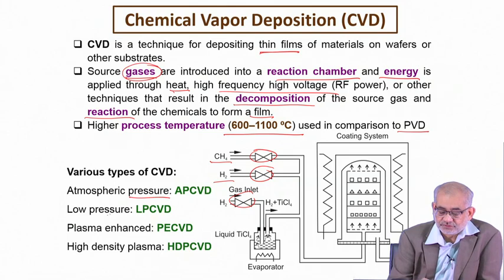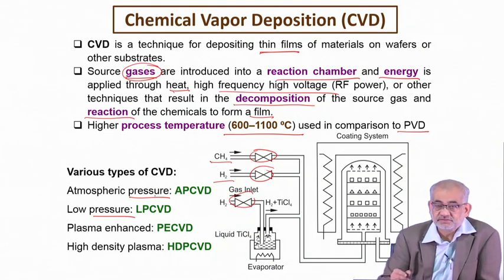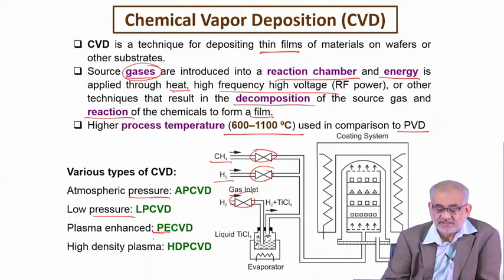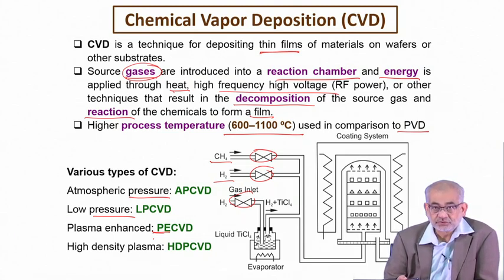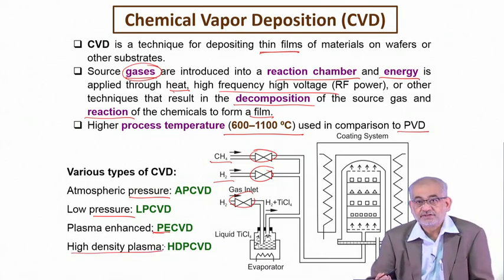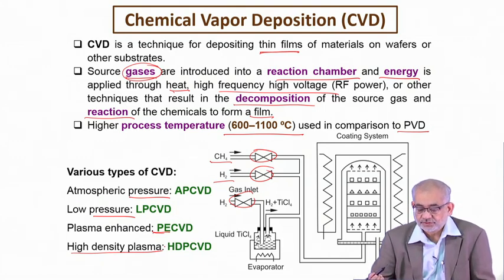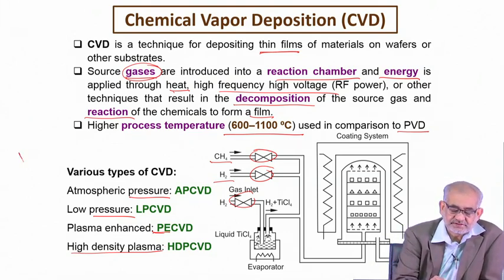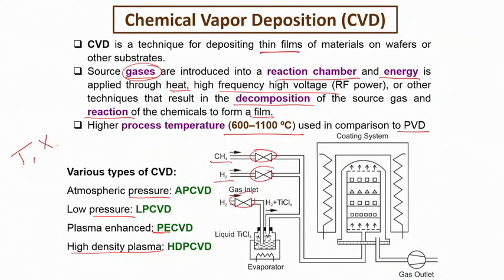Pressure also plays a very important role. Pressure-wise, we can have atmospheric CVD, low pressure at just a few millibars, or plasma-enhanced CVD by applying a chemical — sorry, electrical — potential difference. The plasma can enhance the growth and adherence of the CVD film, and we can even create a fairly high density plasma to produce not only thicker but also more complex films. The key variables are temperature, composition, pressure, and time — all are major important parameters for the CVD process.